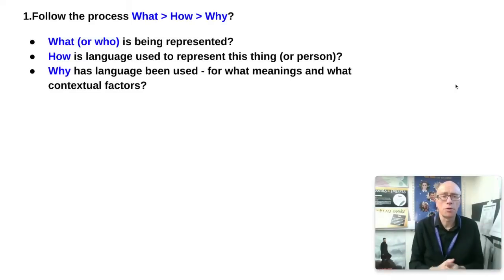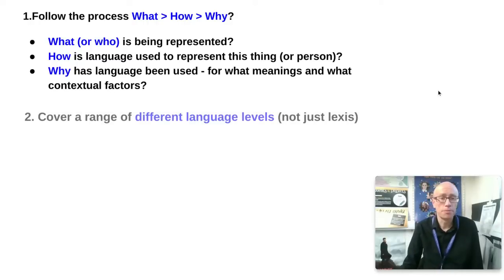Right, now so here's the process of what you're going to be doing and it's a what-how-why sequence I would be suggesting. So first of all you need to be thinking when you're reading through it: what or who is being represented? You want to write them down on the paper, you want to have about four things or people or ideas that are being represented. Second thing is you want to link in the thing or the person being represented to the language - so how is language being used to represent this thing, for example through first person plural pronouns? And then thirdly, why has the language been used in this way? I.e. what meanings and representations is it producing and what are the contextual factors that have led to it? What, how, and why - that's what you need to be doing about four times in your allotted half an hour for each question.